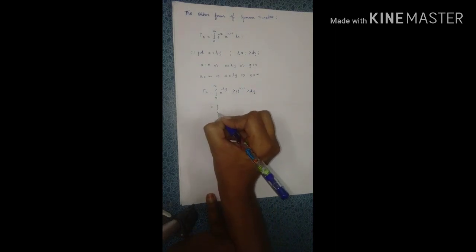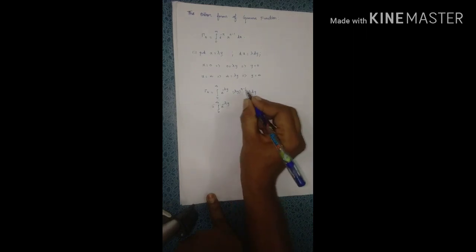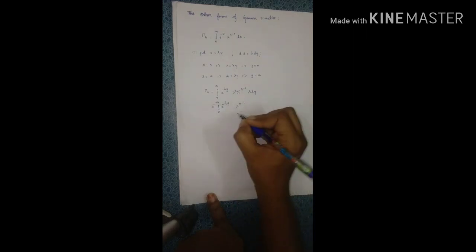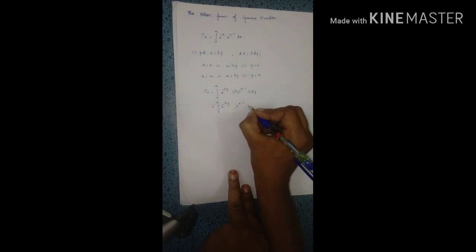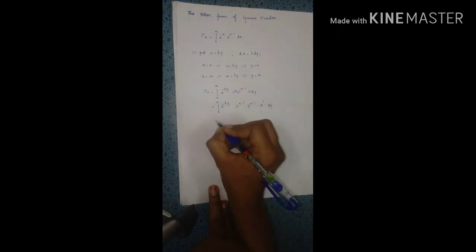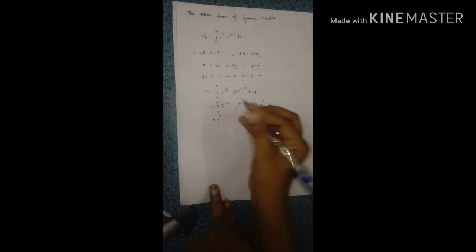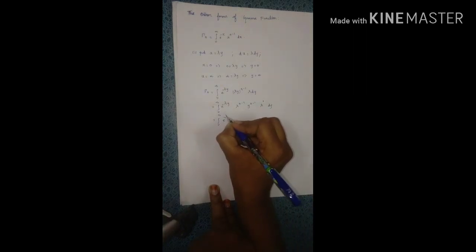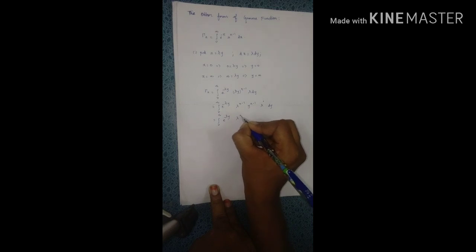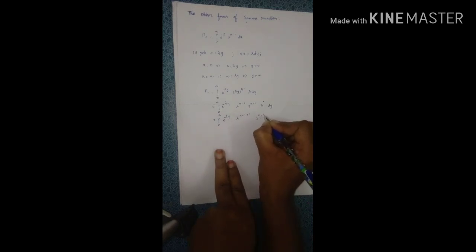Next step: from 0 to infinity, e to the power of minus lambda y, splitting out y: y to the power of n minus 1 times lambda, giving y to the power of n minus 1 times lambda times y to the power of 1. So the integral is from 0 to infinity of e to the power of minus lambda y times lambda y to the power of n minus 1, dy.